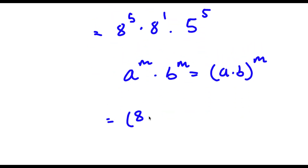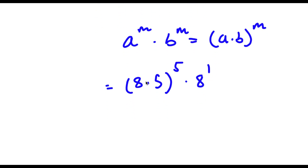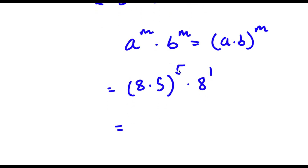So this is going to equal 8 times 5 to the power of 5, times 8 to the power of 1. And now 8 times 5 is 40. So now I have 40 to the power of 5 times 8 to the power of 1.